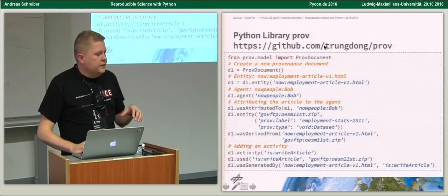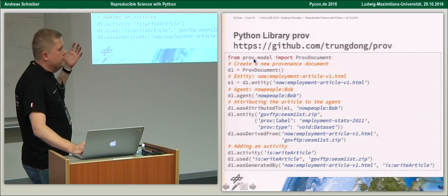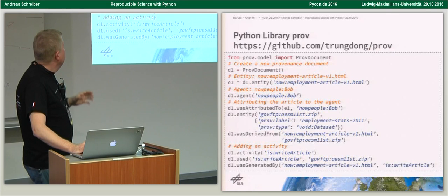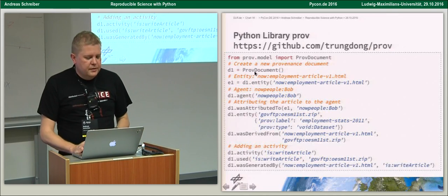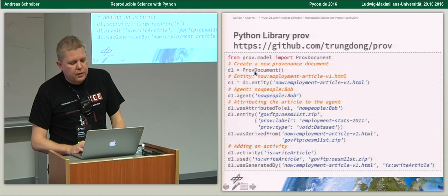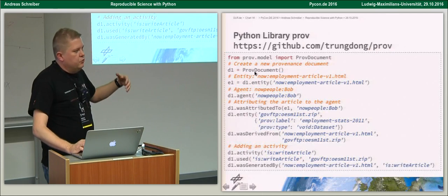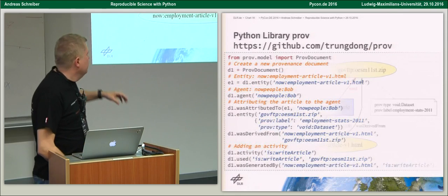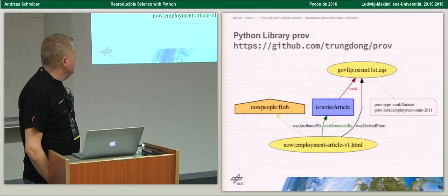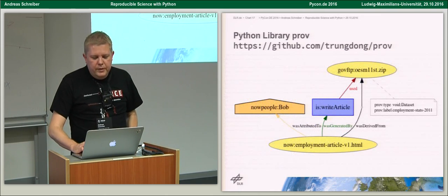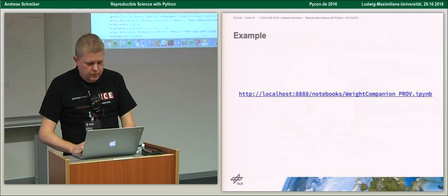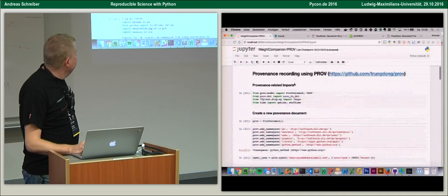In the prov library, there's the concept of a provenance document — a container where you store your provenance graph. In this simple example from the prov tutorial, it's about an article on a website. You have an agent called Bob, entities attributed to each other, and so on. You can write this in Python, generate the provenance information, and visualize it — for example, the provenance of an HTML article at the bottom which was generated from a zip file with some data.